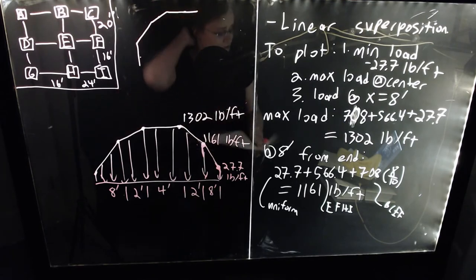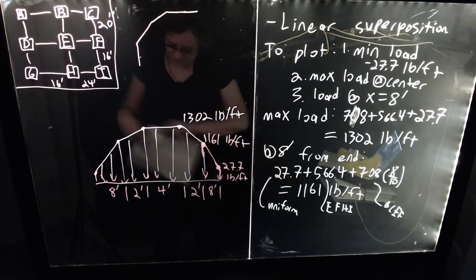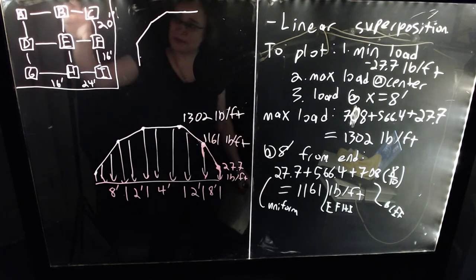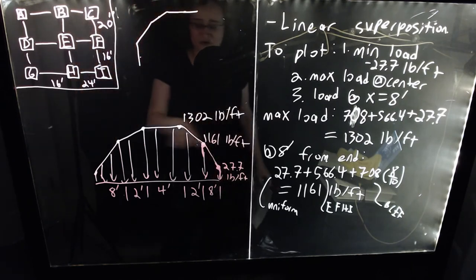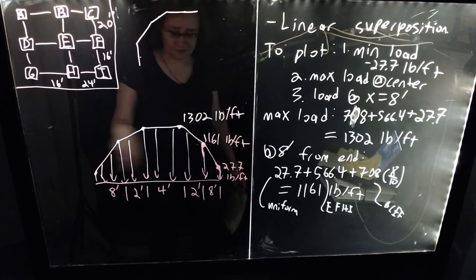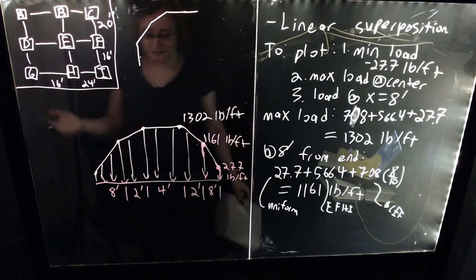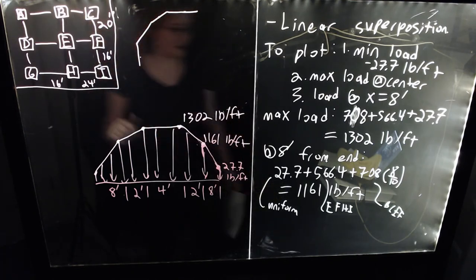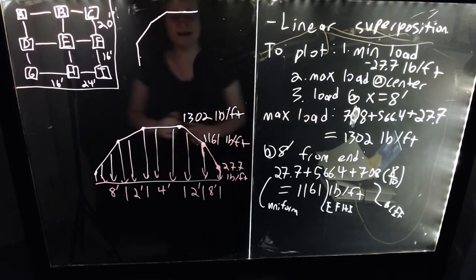That concludes the first problem, where we were asked to find the overall load diagram on beam EF. When you have asymmetric loadings — such as having bay BCEF with different dimensions than bay EFHI — you very quickly get very interesting load diagram shapes. If the system had been symmetric across beam EF, we would still have a trapezoidal shape with that minimum beam self-weight, but we wouldn't have this funky barn-roof kind of shape. That is what they pay structural engineers for.